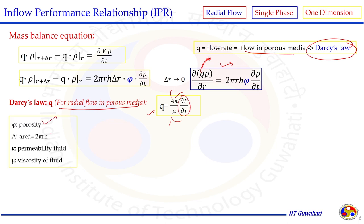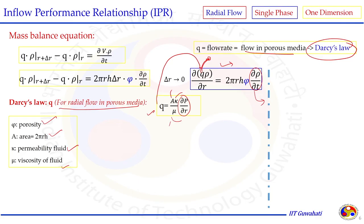Darcy law for radial flow in porous media is given by the expression where A is the area, k is permeability, μ is viscosity of the fluid, and the pressure gradient appears. However, on the right-hand side, the change in density with respect to time cannot be measured directly at a particular location within the reservoir. We need to convert this into some term that can be measured or calculated.